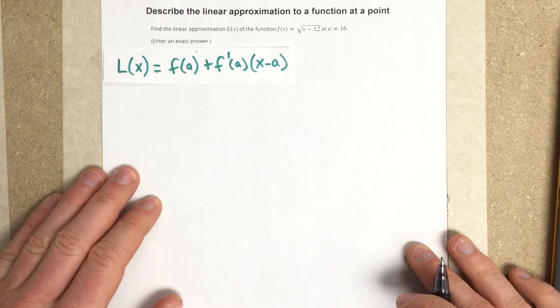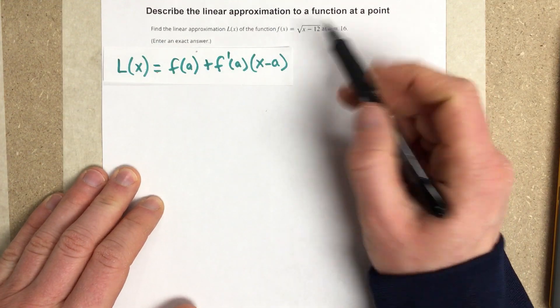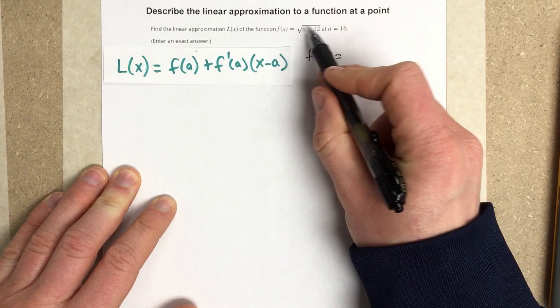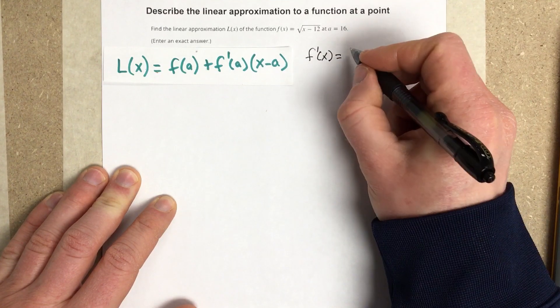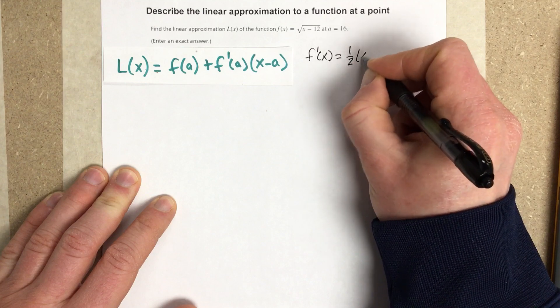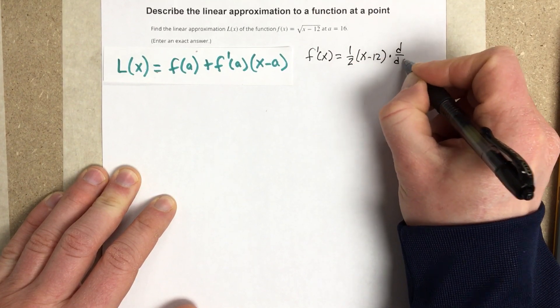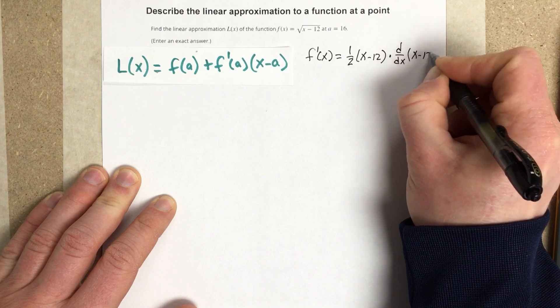So I need to know what the derivative is of this function here. So I'm going to go ahead and start by saying f prime of x is equal to, this is to the one-half power. So I'm going to write one-half x minus 12 times the derivative of the inside x minus 12. That's the chain rule there.